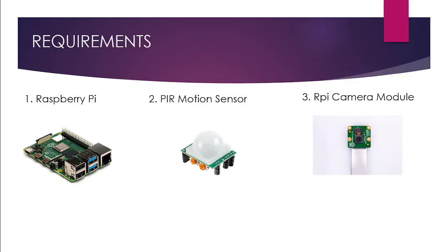Talking about the requirements for this project: we need a Raspberry Pi, which can be any model — here I am using Raspberry Pi model 3B+, but you can use any model like Raspberry Pi Zero or 4. The second requirement is the PIR motion sensor, used for detection of motion as seen in the demo. The third requirement is the Raspberry Pi camera module — here I am using a 5 megapixel camera module, but you can also use the 8 megapixel newer-based camera module.